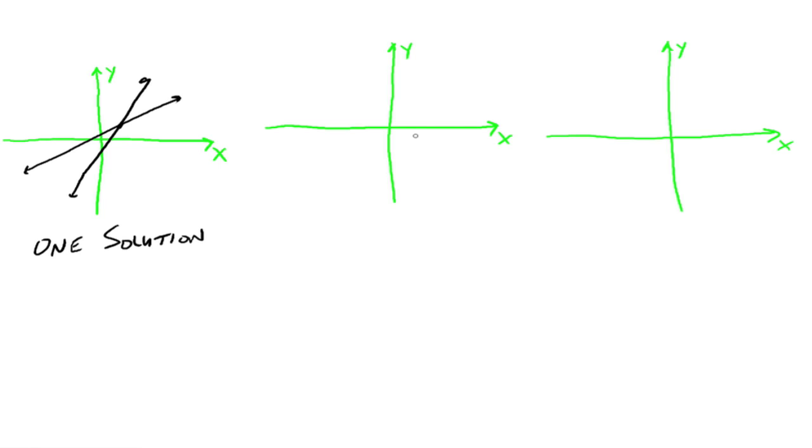So now what else can happen if you graph two lines? Well, they could be parallel, which means they don't intersect. So therefore, what would be the solution to the system? That's right, there would be no solution to the system. This is also called an inconsistent system. So systems where there is no solution, they're just also referred to as inconsistent systems.